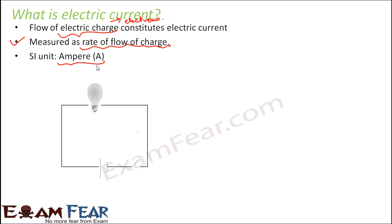Looking at a circuit with a bulb tied to a battery or cell and a switch — these symbols represent the components in an electric circuit, which we will learn about in more detail later. When you switch it on, the entire circuit is complete and electric current flows through it, making the bulb glow.